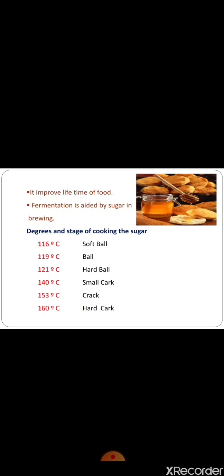Degrees and stages of cooking the sugar. 116 degrees Celsius, soft ball, suitable for marshmallow. 119 degrees Celsius, ball, suitable for fondant. 121 degrees Celsius, hard ball, suitable for nougat. 140 degrees Celsius, small crack, suitable for Italian meringue. 153 degrees Celsius, crack, suitable for dipping fruits. 176 degrees Celsius, hard crack, suitable for cold sugar.